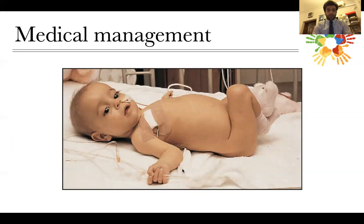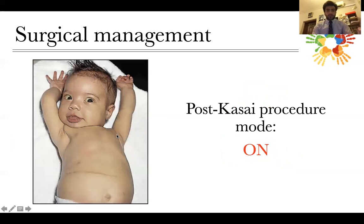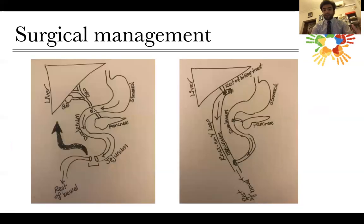For the medical management, a malnourished patient receives nutrients by two lines: a nasogastric tube for enteral nutrition, and a central venous line for parenteral nutrition. For surgical management, the post-Kasai procedure result is shown — the scar from the drain is visible. The Kasai portoenterostomy is a reconstruction of the biliary tract.